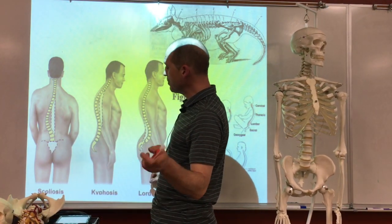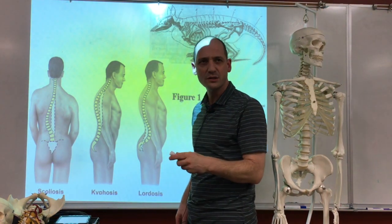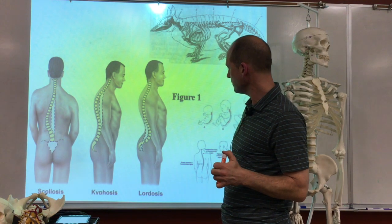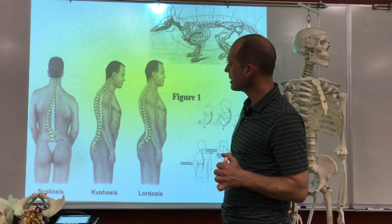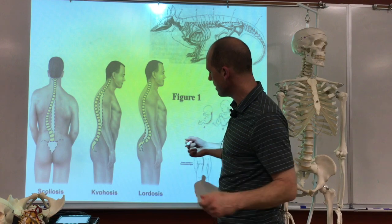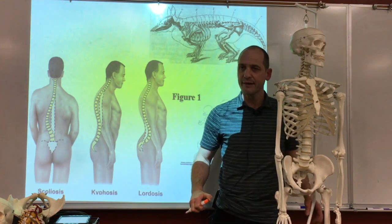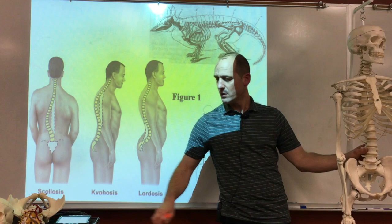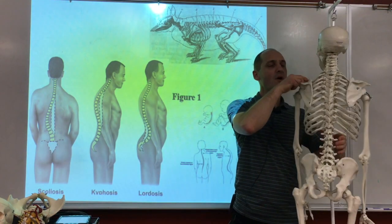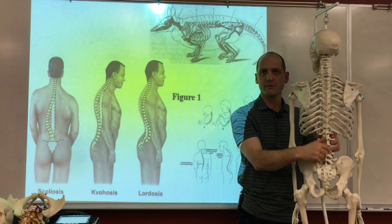This is a place where I want to start. There's a question about kyphosis, lordosis, and all that kind of stuff. There also is a question about convexity and concavity. When I look at the curvatures of the spine from the front or from the back, I want it to be straight up and down. I don't want side bending in there.